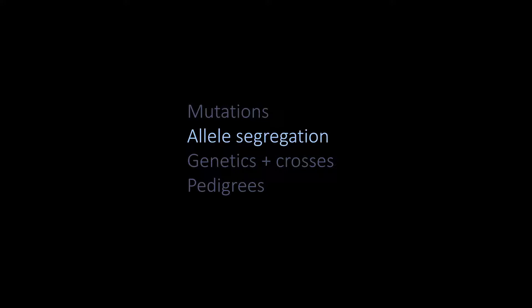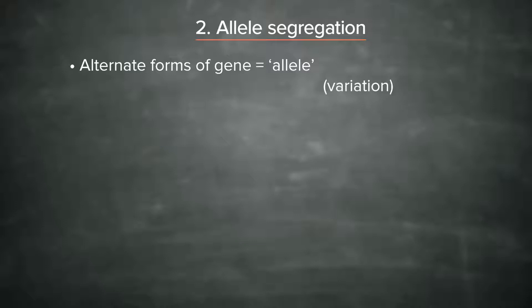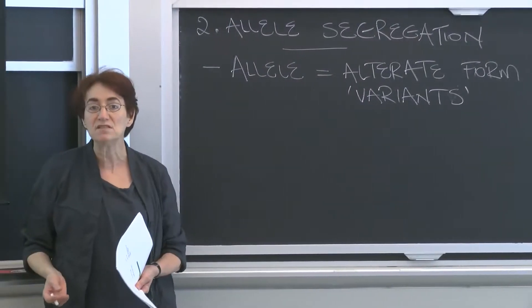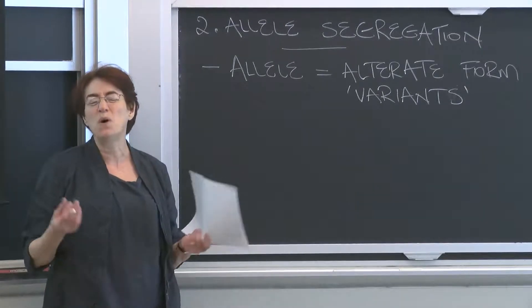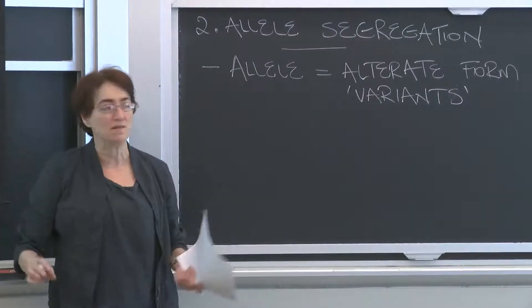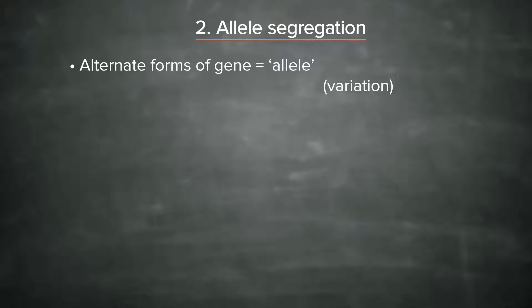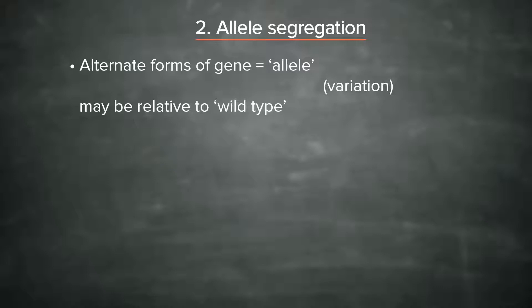The first thing we need to think about is what an allele means. An allele is an alternate form of a gene. Alleles can be called variants, and they may be designated relative to some reference DNA sequence, some reference gene, that is called wild type — although this is not done in humans, it's done in various other organisms. So variants may be relative to wild type as your reference. Alleles are there because of different DNA sequences; that's the point.